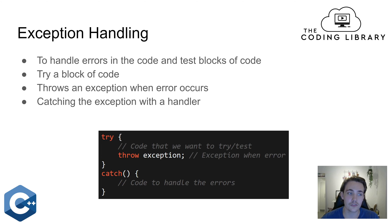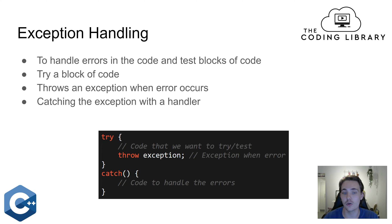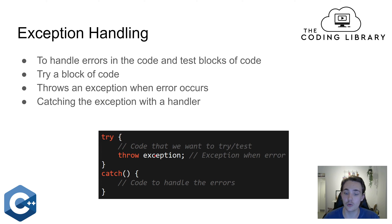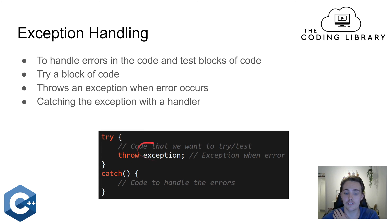Let's first talk about exception handling as an overview. We have exception handling to handle errors in the code and also to test out a block of code that we have made. We can try out a block of code with the try keyword. Inside these curly brackets, we will have the code that we want to test or try out. And then if some errors occur, we can call the throw keyword and throw an exception.